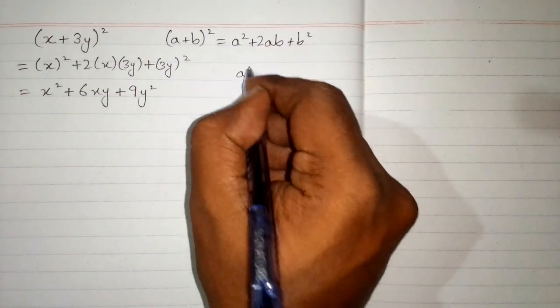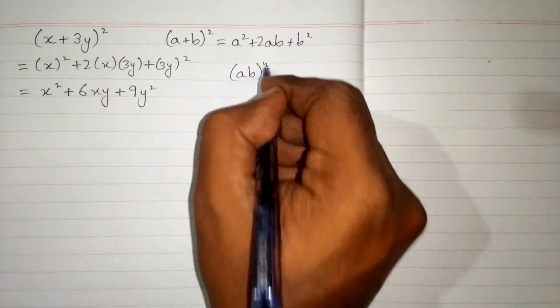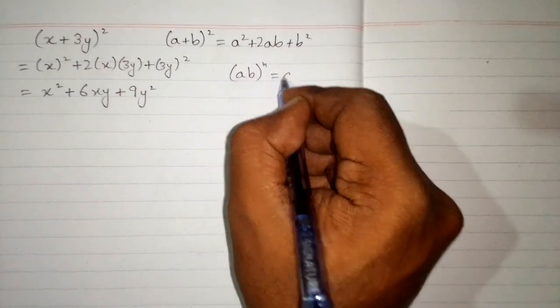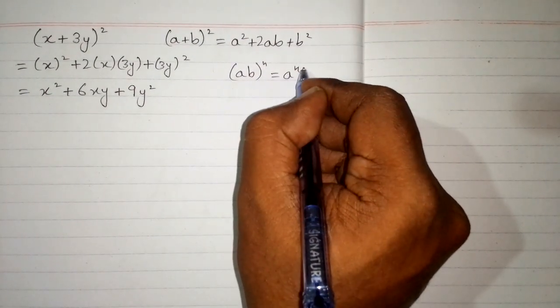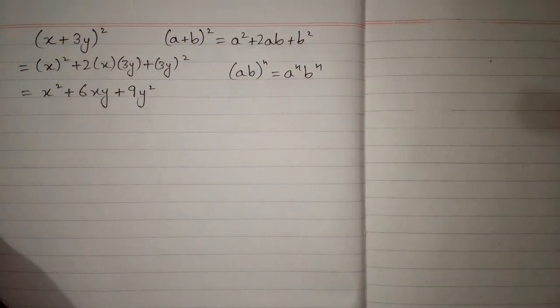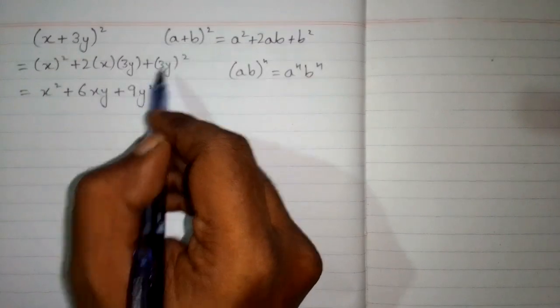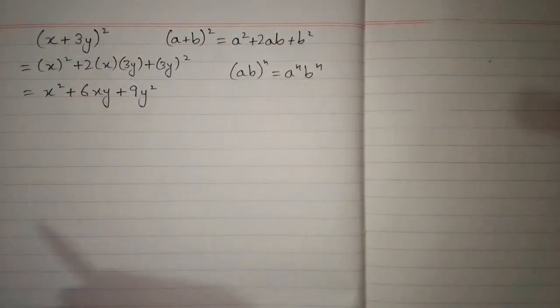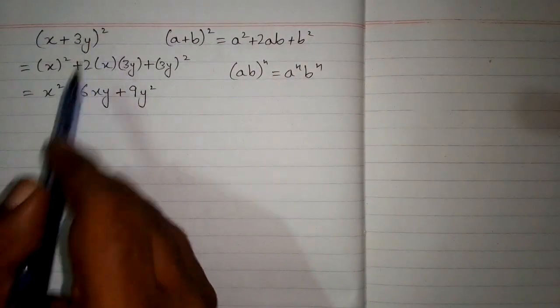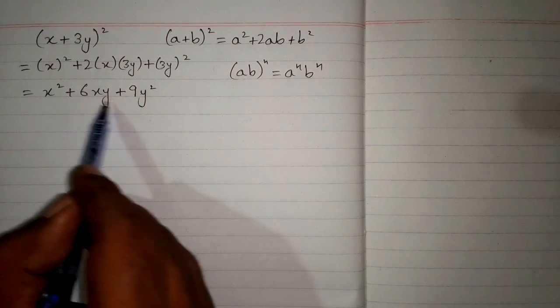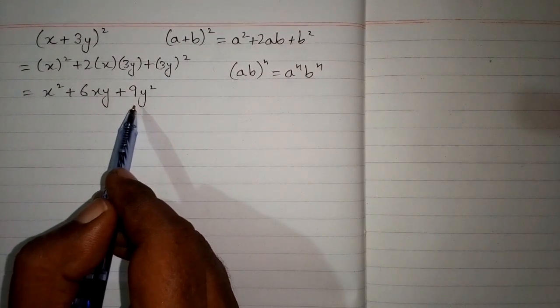We will take the square of 3 and the square of y, so we have 9y². So (x + 3y) whole square is equal to x² + 6xy + 9y².